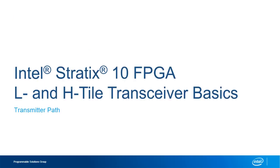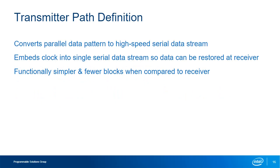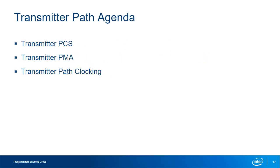Now we will talk about the transmitter path. The role of the transmitter path is to convert parallel data patterns into serial data that can be transmitted at high data rates. The transmitter must also embed the sampling clock into the serial stream so the clock can be extracted at the receiver and used to sample incoming data. To embed the clock, the transmitter ensures there are adequate transitions in the serial data stream for a receiver PLL to detect the appropriate clock rate and lock onto it. We will break the transmitter path down to its two sub-layers — the PCS and the PMA — and finish by discussing clocking of the transmitter path.